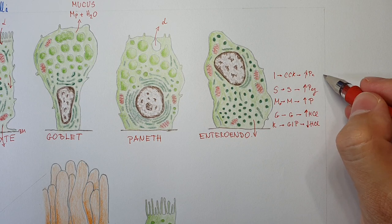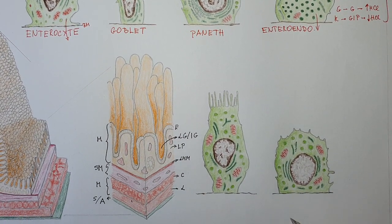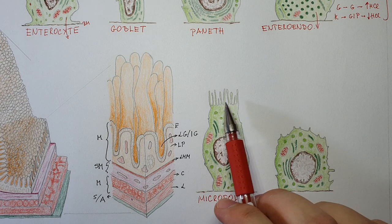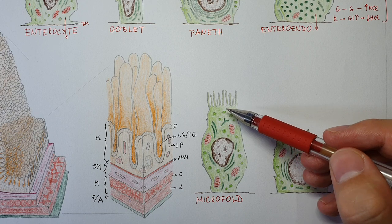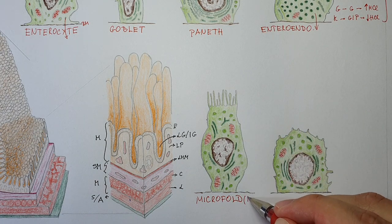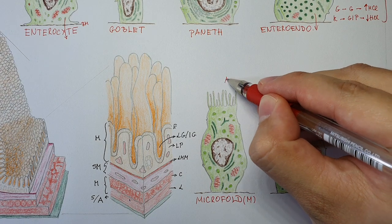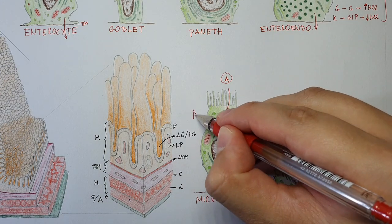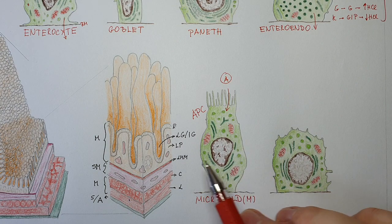There are also microfold cells, also called M cells. Unlike enterocytes, they don't have villi on their apical surface but instead have folds that are invaginations into the inside of the cell. Scientists found that these cells can take up antigens from the lumen and act as antigen-presenting cells, presenting antigens to intraepithelial T lymphocytes or other cells in the gut epithelium.